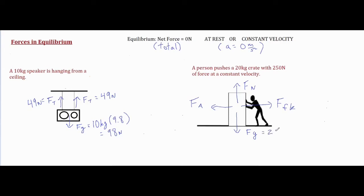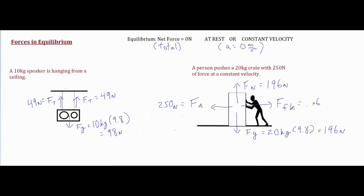For FG, same as before, we're going to take that mass and multiply it by 9.8 and we're going to get 196 newtons. Because there is no vertical movement, we know that our normal force is going to cancel out our force of gravity and it is also going to be 196 newtons. Based on our description we know that the person is pushing with 250 newtons of force, and because everything is supposed to sum up to zero and all cancel out, we know the opposing force — our friction — is also going to be 250 newtons as well.